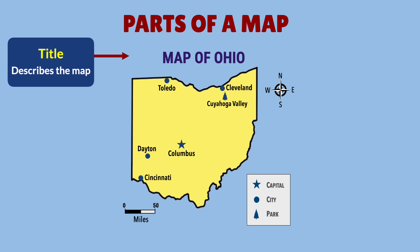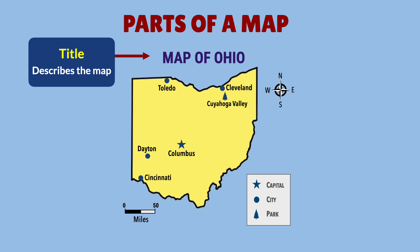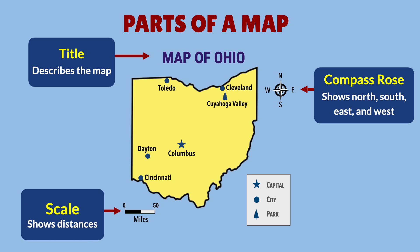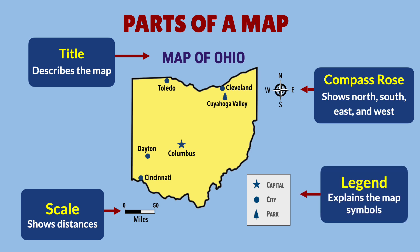The map title is usually found at the top of the map and describes the purpose of the map. The compass rose shows which way is north, south, east, and west. The map scale shows how distance on the map represents real-world distance. And the legend, sometimes called the key, explains the meaning of the symbols used in the map.